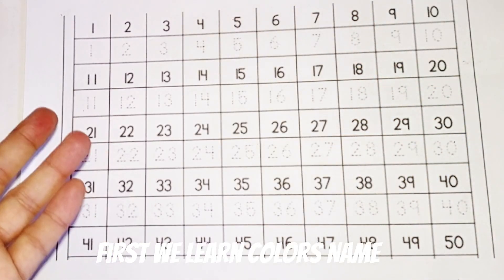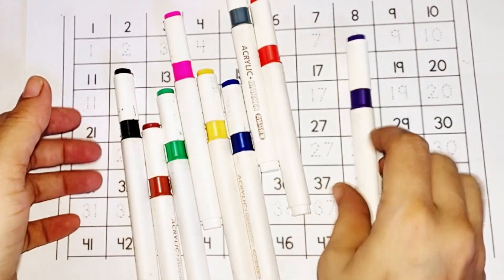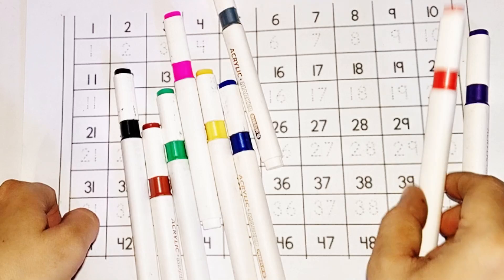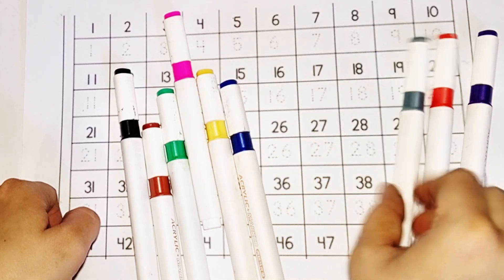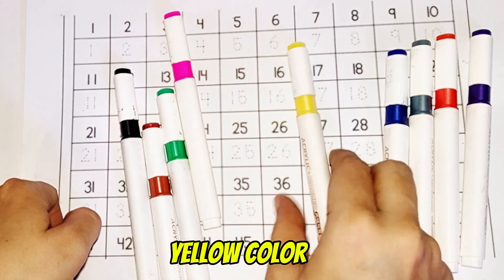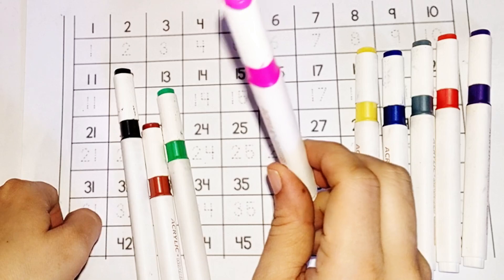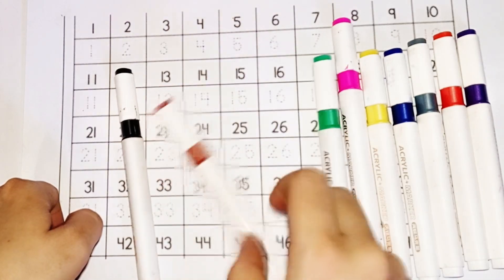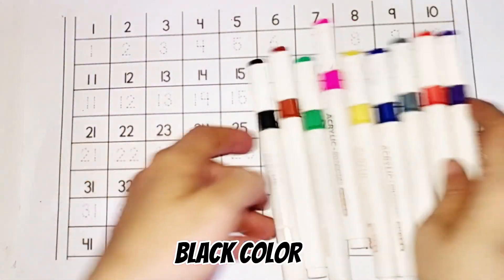First we learn colors' names. Purple color, orange color, gray color, dark blue color, yellow color, pink color, green color, brown color, black color.